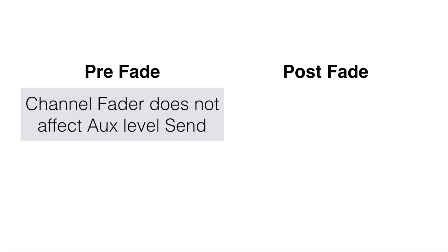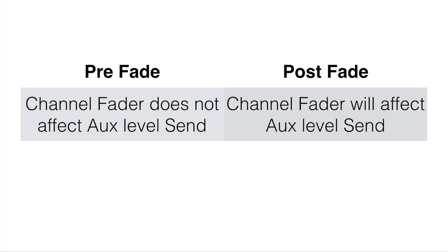There are two ways to send auxiliary signals. The first is called pre-fade, and the second is called post-fade. The word fade is referring to the fader. On a pre-fade, the channel fader does not affect the auxiliary level send, meaning that if the fader is all the way down, it does not affect the signal. However, in the post-fade setup, the channel fader will affect the auxiliary level send, almost acting like a second master control for the auxiliary send.